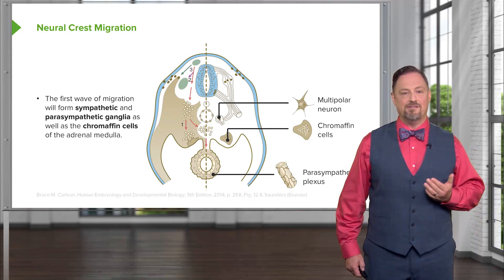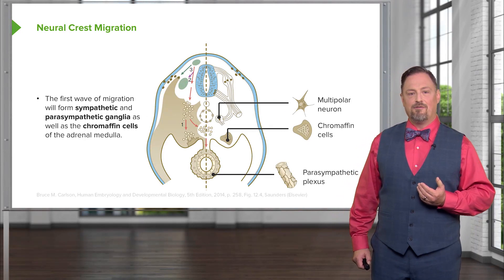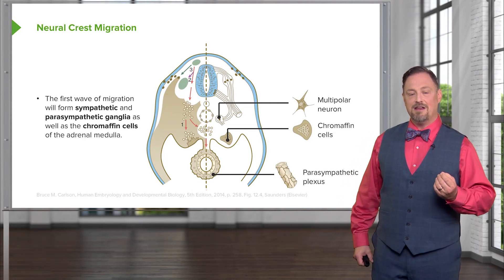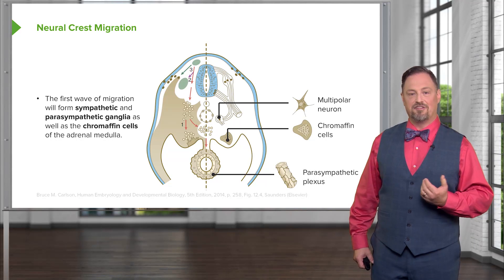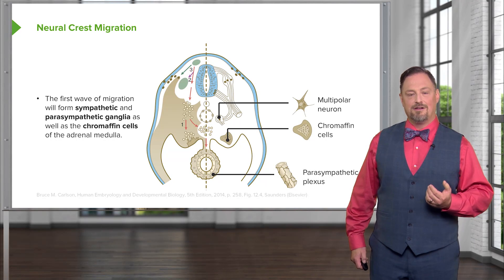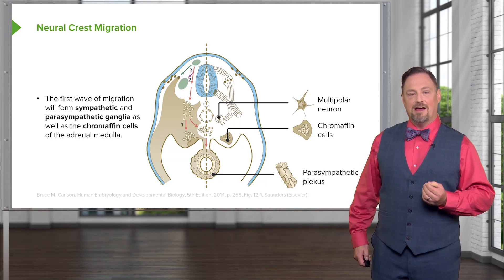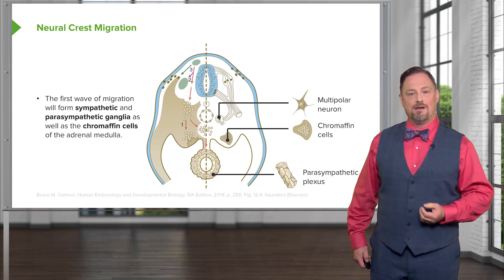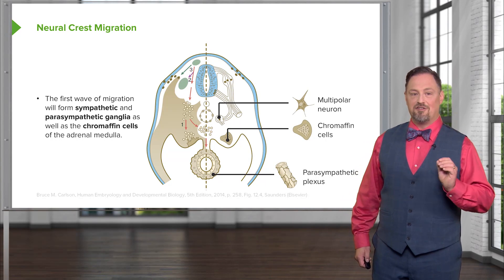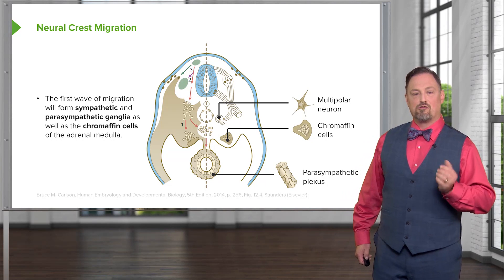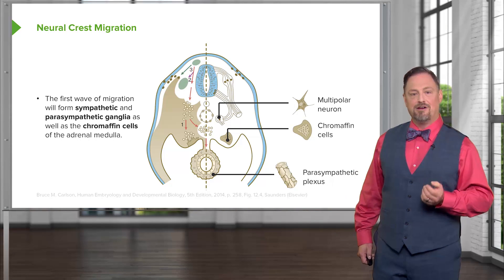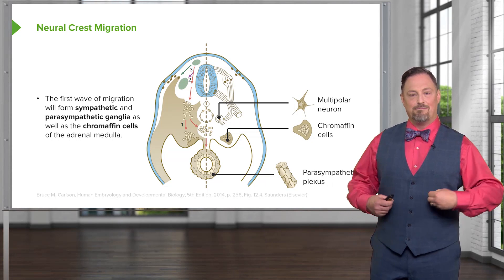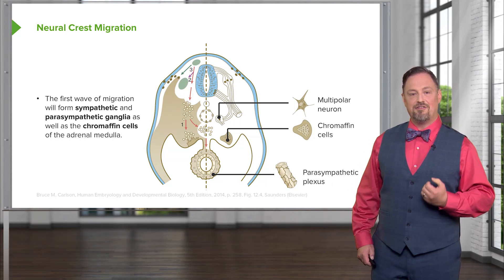The first wave of neural crest cells forms the sympathetic and parasympathetic ganglia that migrate into the wall of organs such as the gut tube, the heart, and the reproductive tract, as well as the sympathetic ganglia present in front of the aorta. It's worth noting that the chromaffin cells of the adrenal medulla are sympathetic ganglia that, instead of remaining in front of the aorta, have migrated into the center of the adrenal gland.